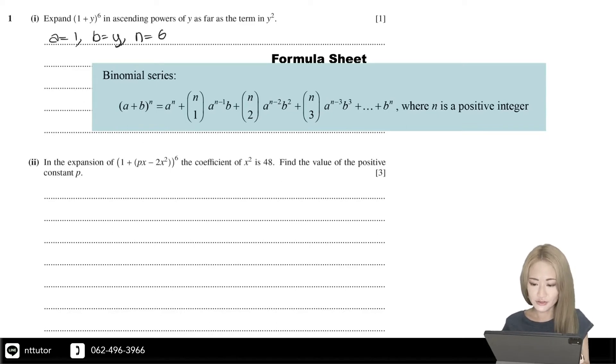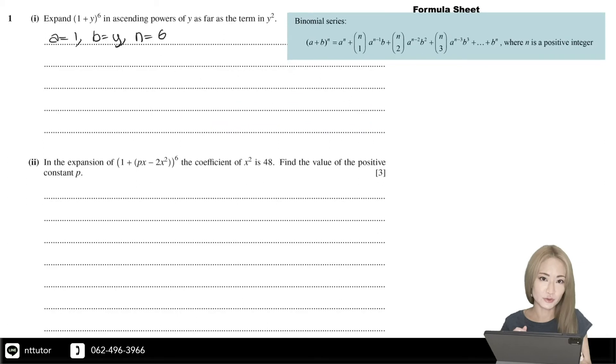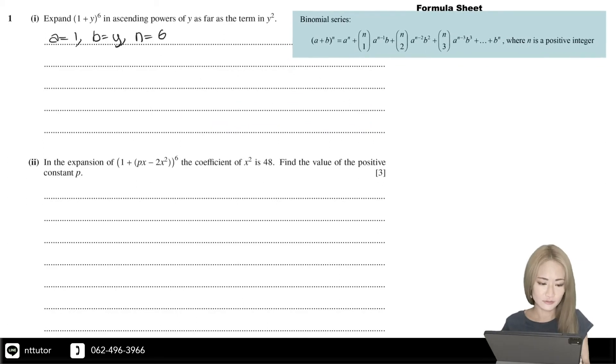All you need to do is substitute it into that formula. So (1+y)^6 equals a^n, that's 1^6, plus 6 choose 1, 1^5 y^1, plus 6 choose 2, 1^4 y^2. We stop there because it says as far as the term in y².